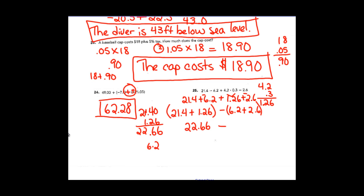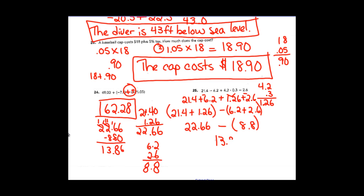Twenty-two and 66 hundredths minus eight and eight tenths. I need to borrow a couple of times: sixteen minus eight is eight; eleven minus eight is three; and I get thirteen and 86 hundredths. I know I went a little fast on that one — if you need more explanation, replay any part of this, or come in tomorrow and ask me questions. Tomorrow we're going to be working on pages nineteen and twenty.